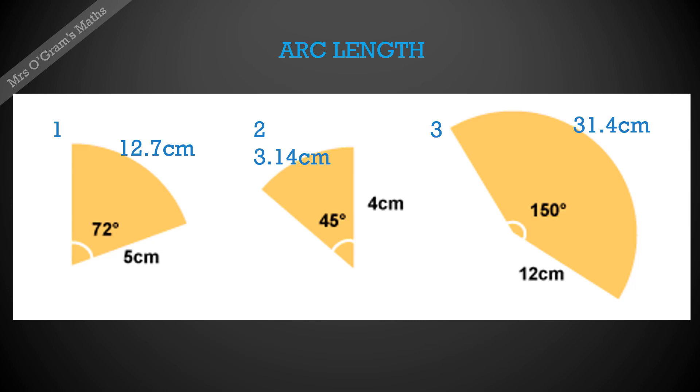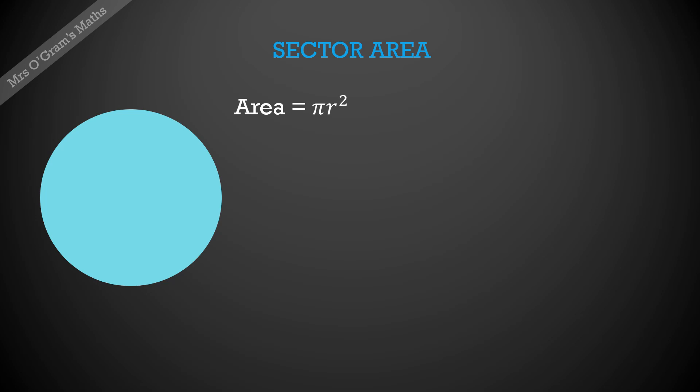All right, next we have sector area. So again, we know the area of a circle would be π times the radius squared. But if we want to just take a portion of it, then we need to work out the area of that sector. So again, we've got this θ marked in the center, and we're going to take the fraction of the area this time, so the fraction that we're working out of is θ over 360 degrees.